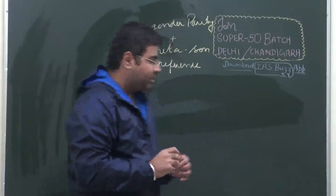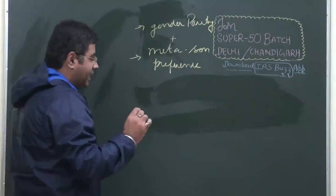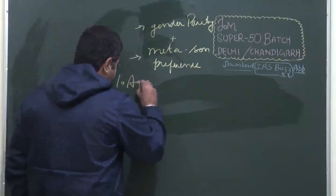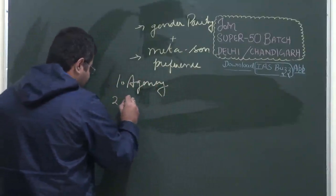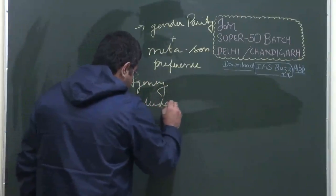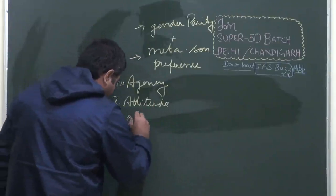If we categorize these indicators, they can be categorized in three ways. Number one is agency, second is attitude, and third is outcome.